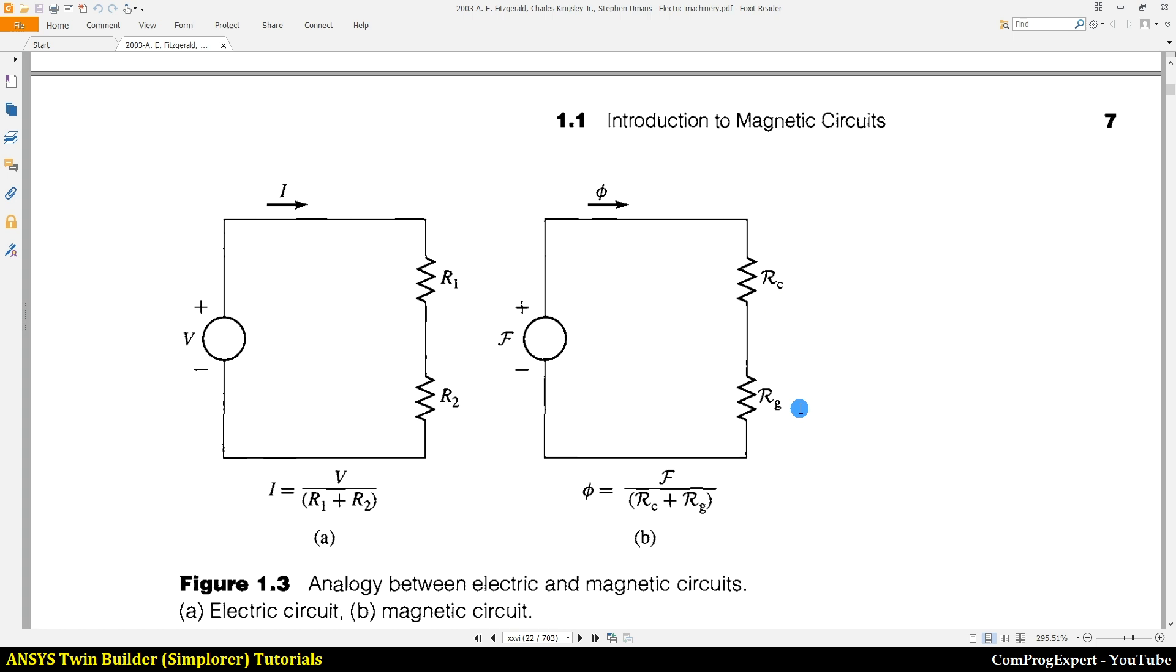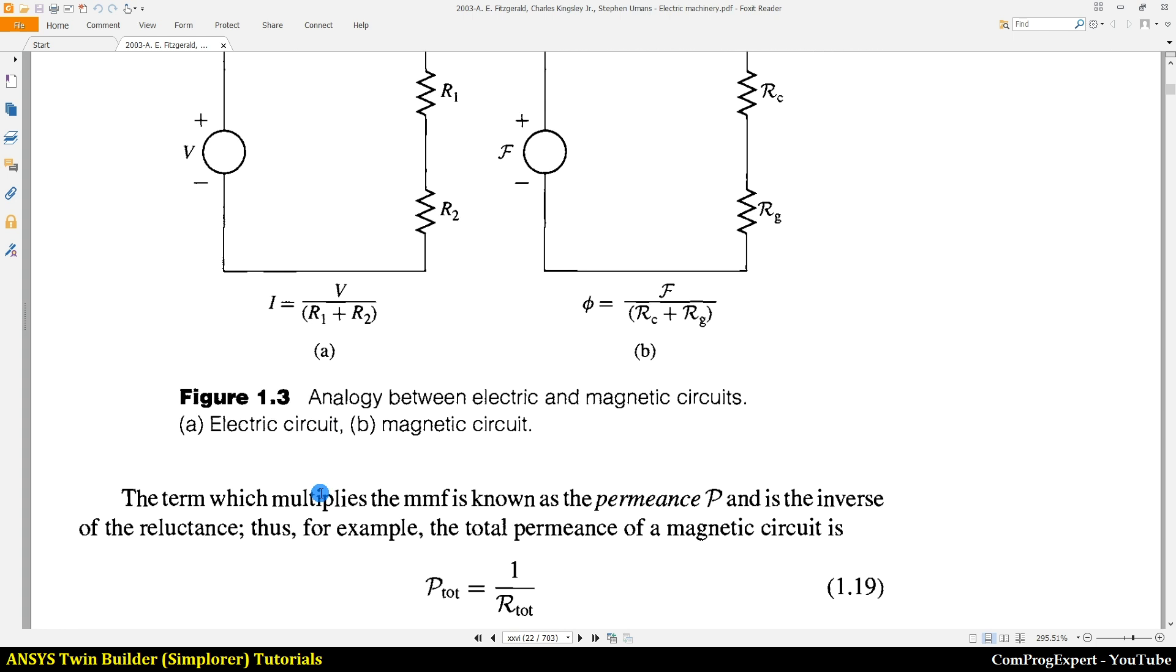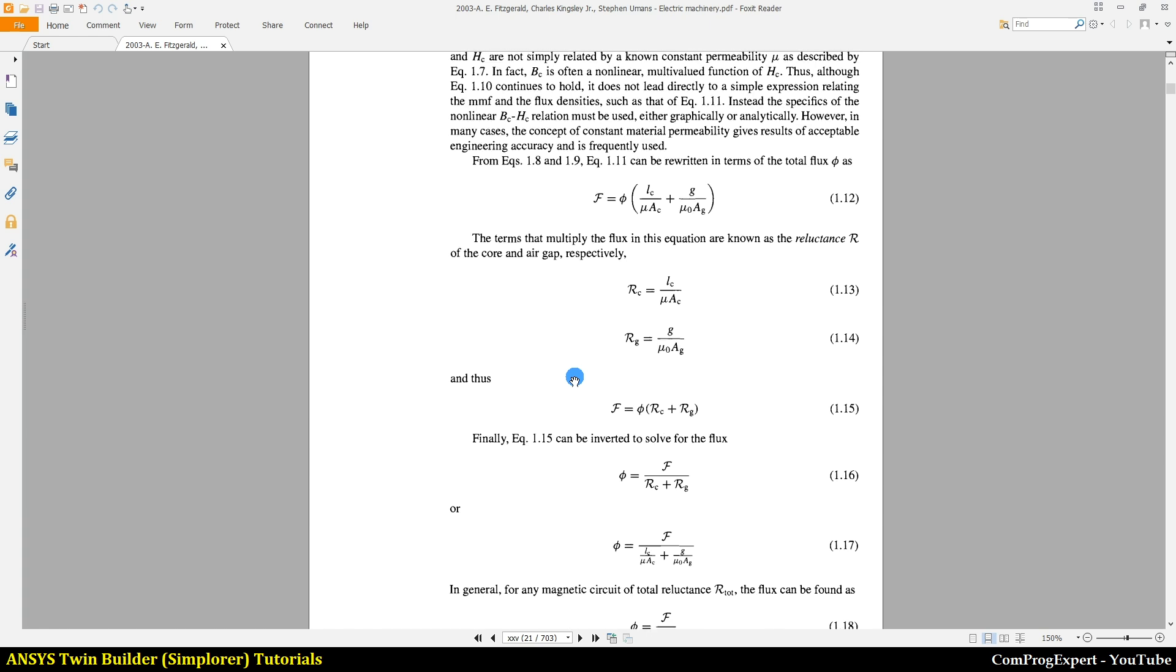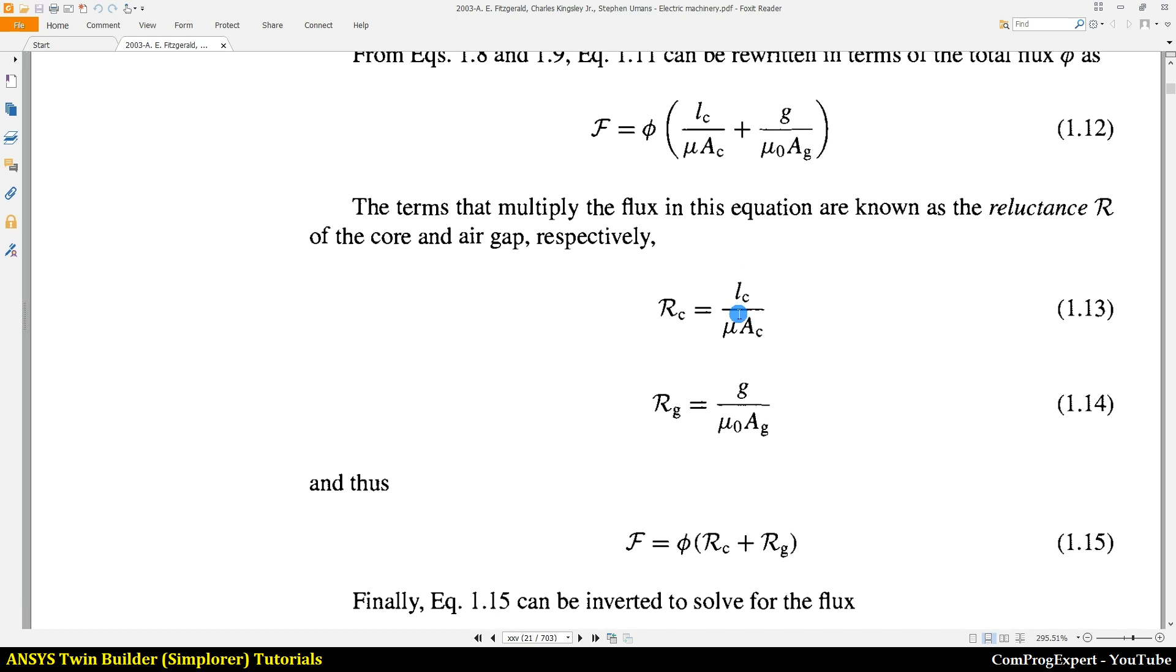Similar to an electric circuit we can find the flux using this equation, that is the total MMF divided by the sum of the reluctances of the system. This is the counterpart electrical circuit. We know that the reluctance of the core is the length of the core divided by mu Ac, the cross sectional area of the core, and this is the reluctance of the air gap.